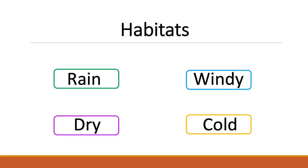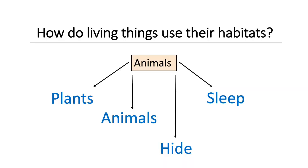How do living things use their habitats? Animals use the plants living in their habitat for food. Some animals eat other animals that live in the same habitat.